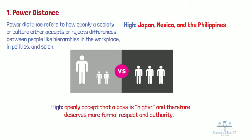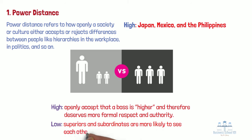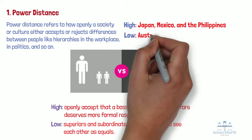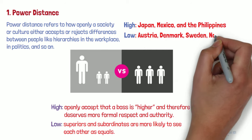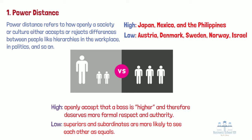At the other end of the spectrum are low power distance cultures, in which superiors and subordinates are more likely to see each other as equals. Countries that practice this culture include Austria and Denmark. Not all cultures view power in the same way. In Sweden, Norway, and Israel, for example, respect for equality is a warranty of freedom. Subordinates and managers alike often have freedom to speak their minds.